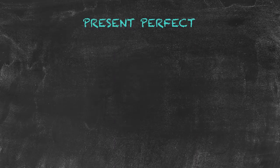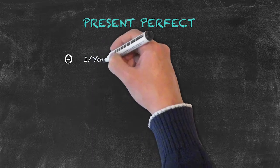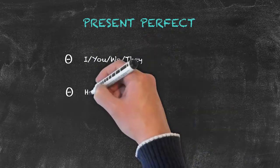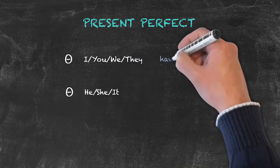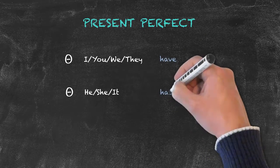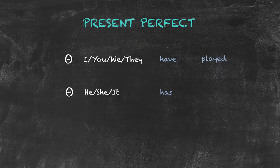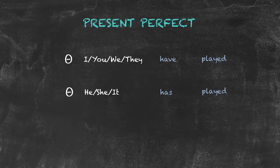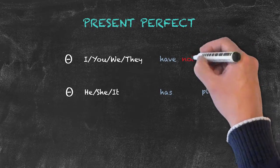To form the negative sentence here, again our subjects are in the beginning of the sentence. We keep our helping verb, whether it be have or has. And between our helping verb and the main verb in our sentence, we of course add the word not.